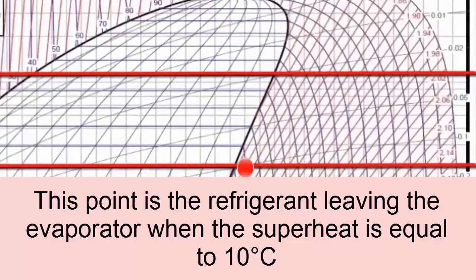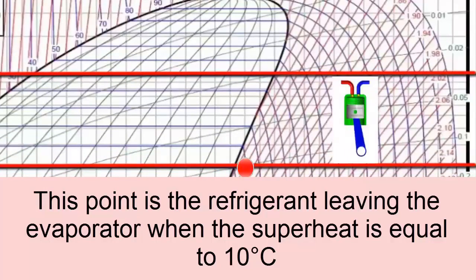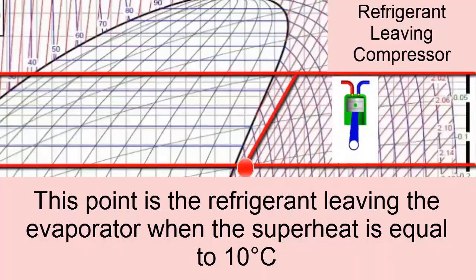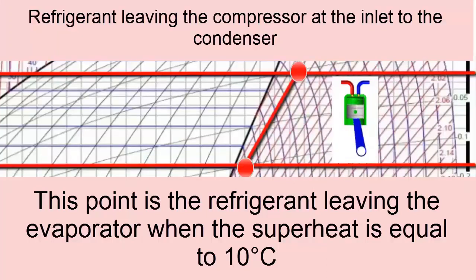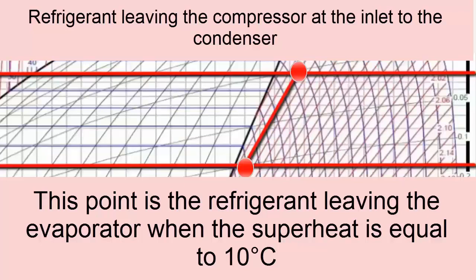This point is the inlet of the refrigerant to the compressor when the superheat is 10 degrees. These lines are isentropic lines and represent the work of the compressor. This is the point that represents the entry of the refrigerant to the compressor. This point is the outlet of the refrigerant from the compressor and inlet to the condenser.